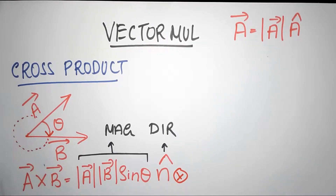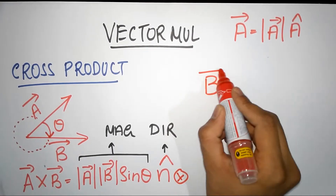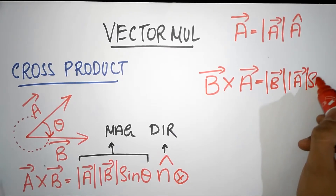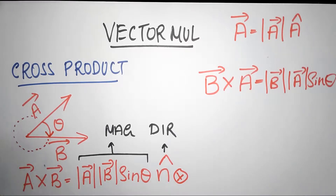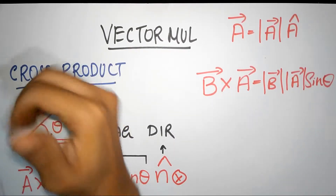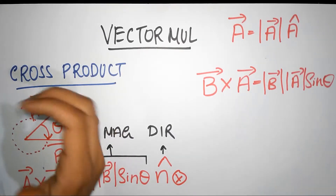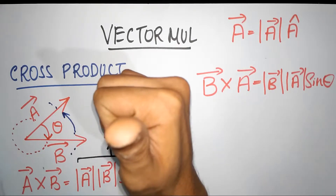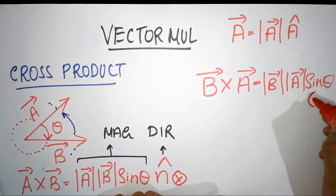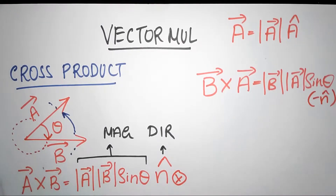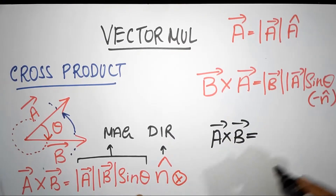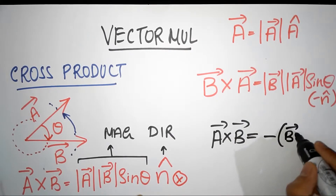What would happen if you had taken B cross A? That would be magnitude of B times magnitude of A times sine theta into — but now look at the direction. B cross A is this way, so the encircling is in the anti-clockwise direction. B is trying to move towards A, so B cross A points upwards — the thumb points towards you. Therefore, if into the page is n-cap, then B cross A gives minus n-cap. This tells you a simple rule: A cross B equals negative of B cross A, so it's not commutative.